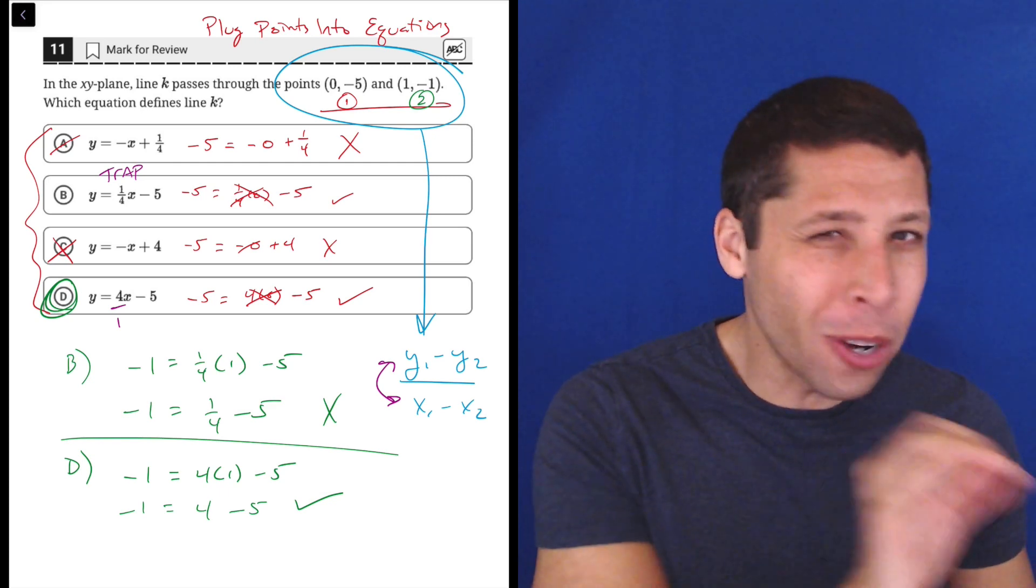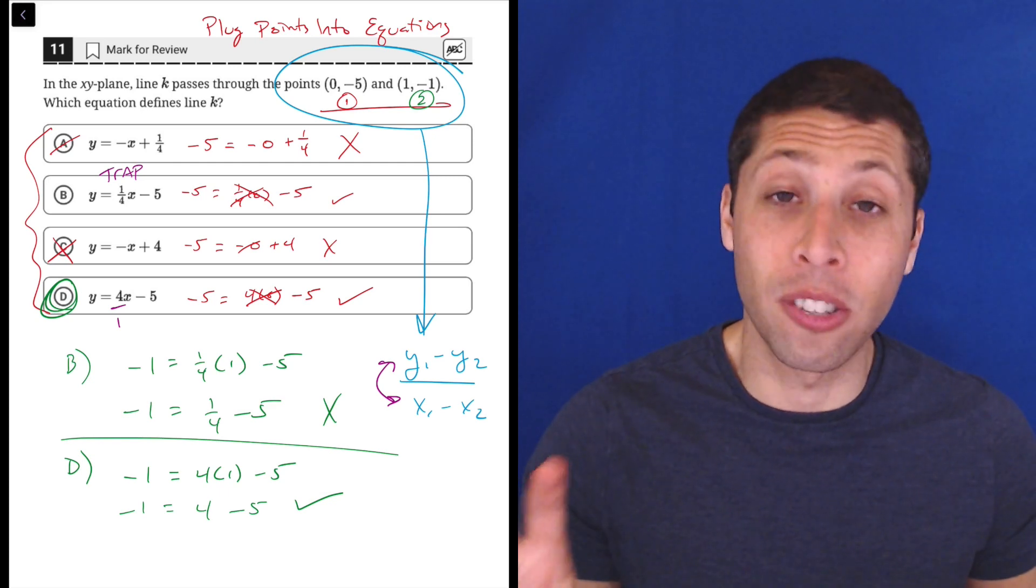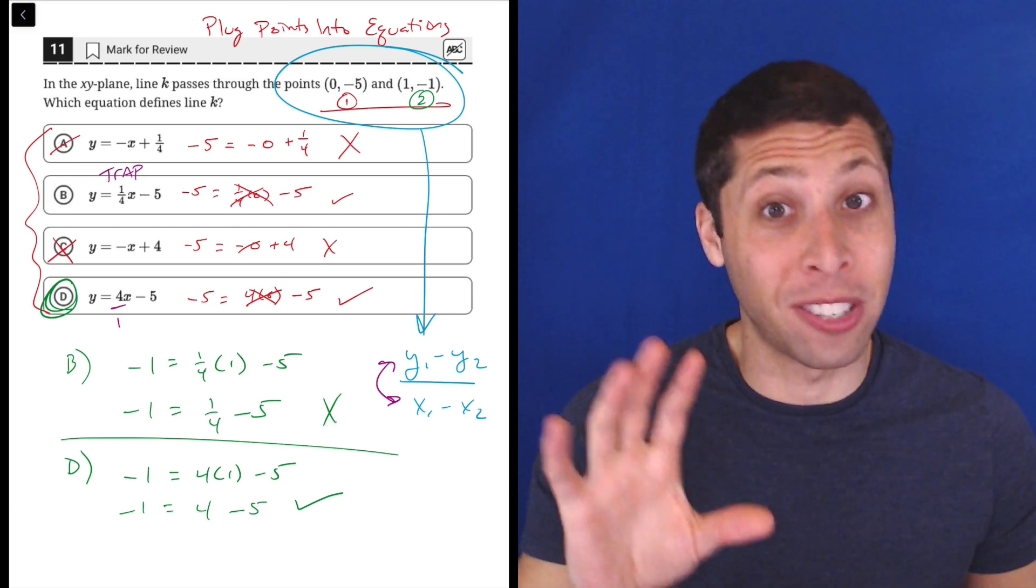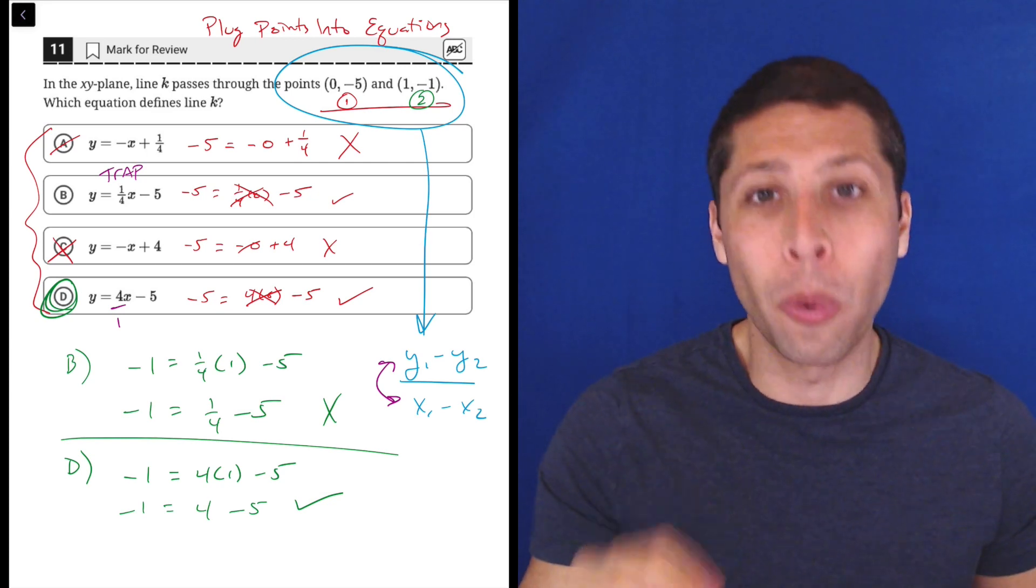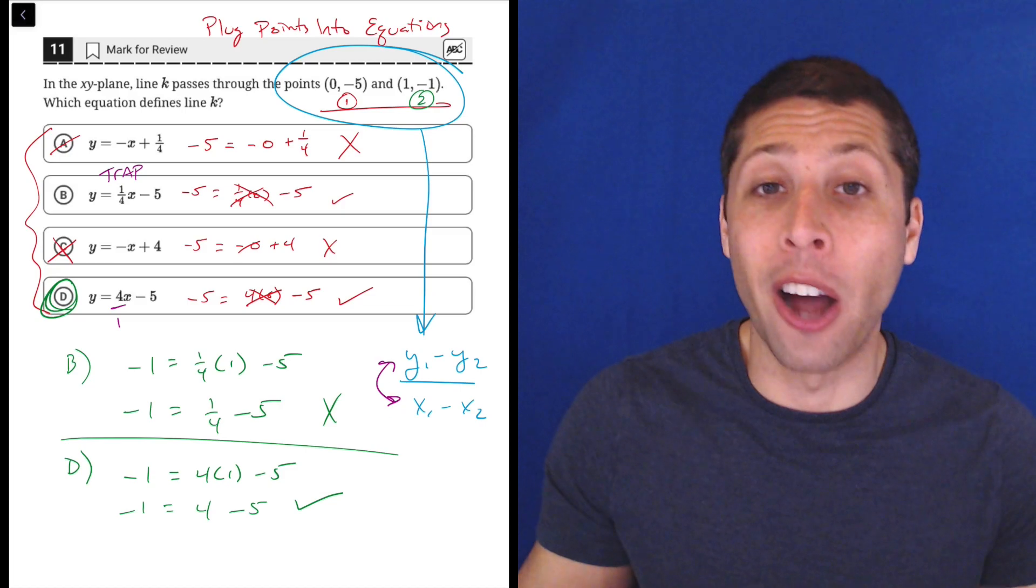And plug points into equations is probably the best tool that we have to avoid those kinds of algebra traps. So as much as possible, even when you know how to do it the algebra way, I strongly recommend switching yourself over to this new strategy. I think in the long run, it'll get you more questions right by just getting things to be easier, but also to avoid those trap answers that are being set for you so you don't fall into them unknowingly.